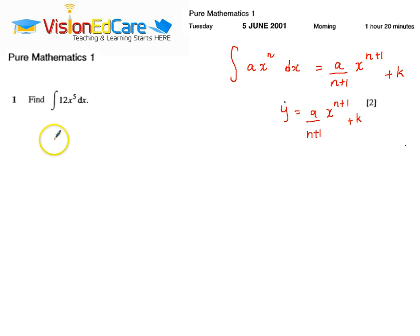So we are going to use this approach. We have the integral of 12x^5 dx, which means that I am going to have 12/6 times x^6 plus the constant of integration, which means that y equals 2x^6 plus k. So that is how you do the question.